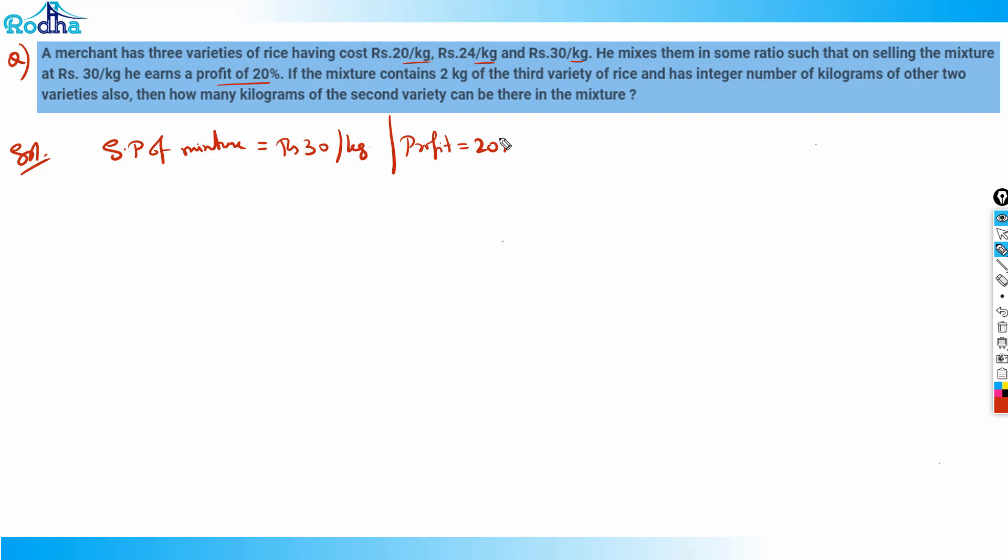In this case, the CP can be easily calculated. Let's calculate CP. Profit is 20 percent and SP is rupees 30.